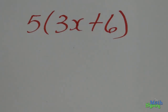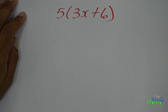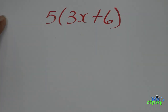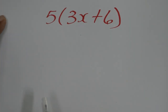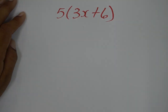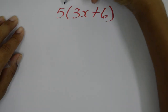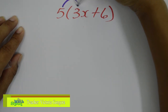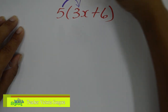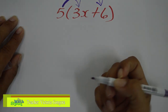Today, we're looking at the distributive law, and we have the expression 5 times 3x plus 6. When distributing, each term inside the bracket must be multiplied by the term directly outside. So that means 5 will be multiplied times 3x, and 5 will be multiplied to 6.